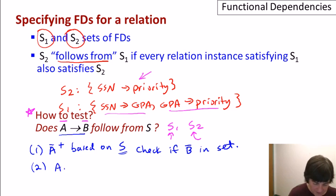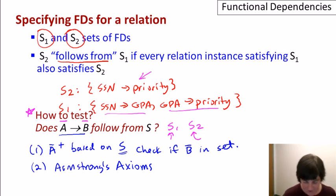The second way to check is based on a set of axioms, a set of rules called Armstrong's axioms. We saw some rules for functional dependencies earlier, but Armstrong's axioms are a specific set of rules that are what's called complete.